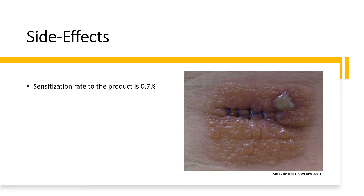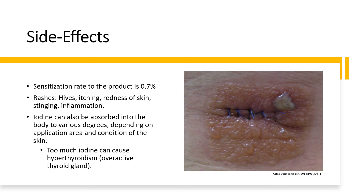Side effects of povidone iodine include rash, hives, itching, redness, stinging, and skin inflammation. Large amounts can be absorbed through the skin and may trigger an overactive thyroid, or hyperthyroidism.